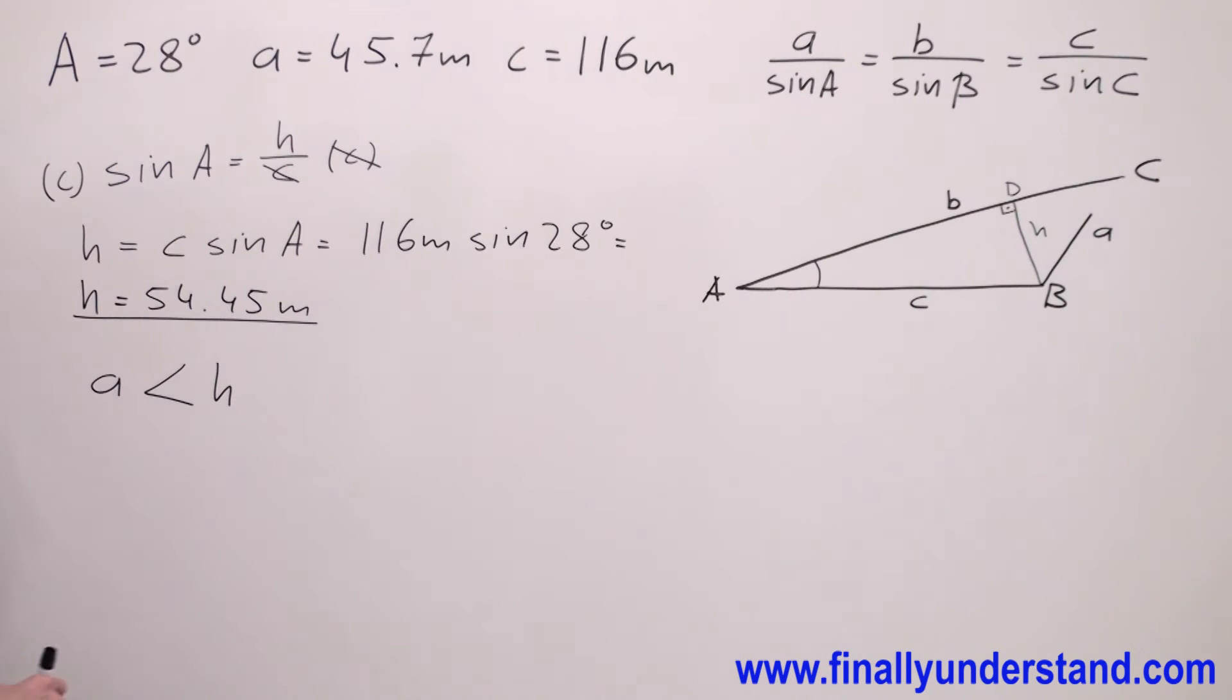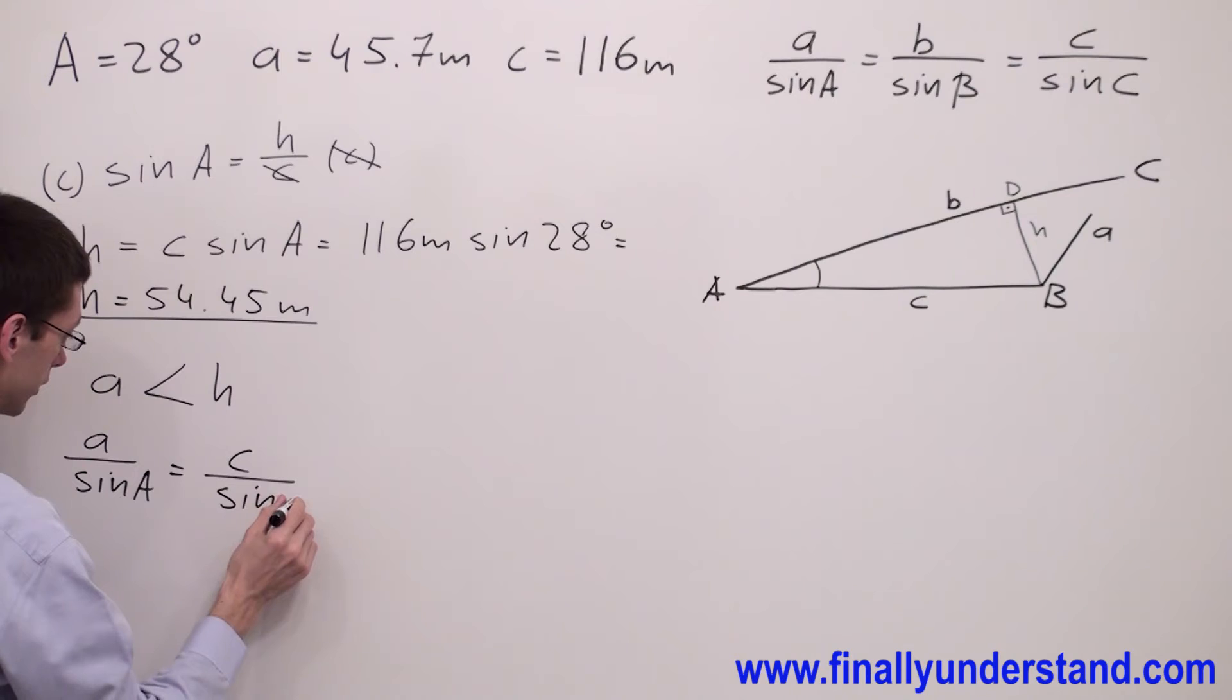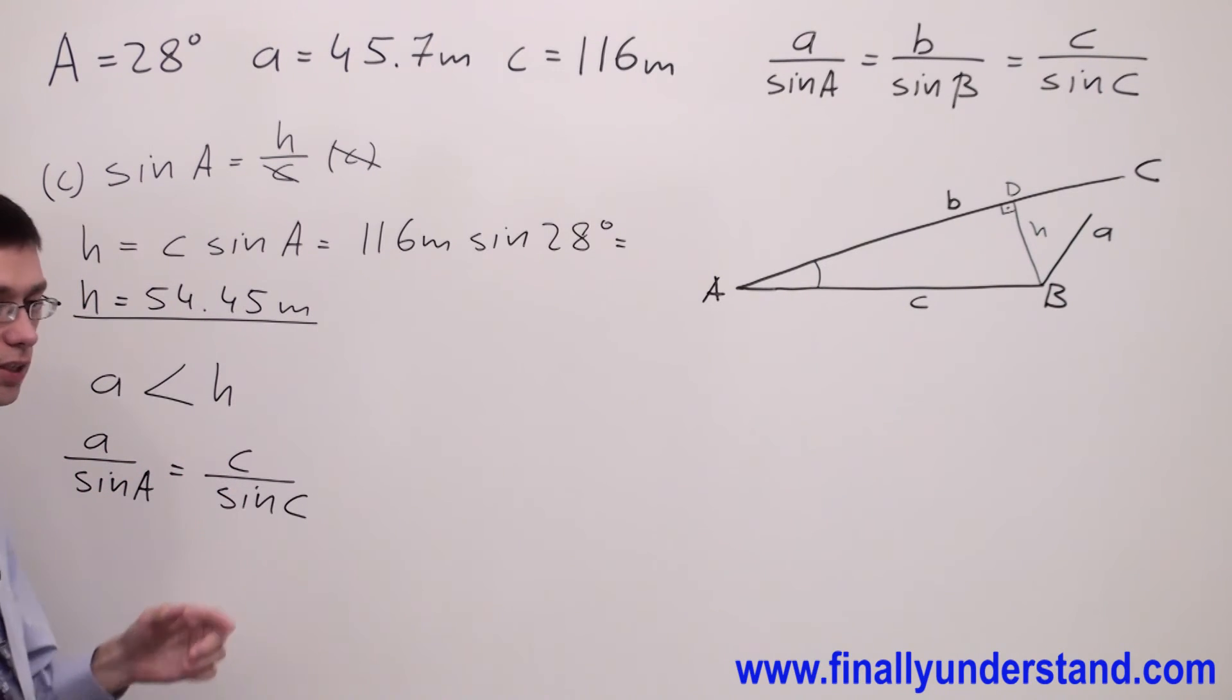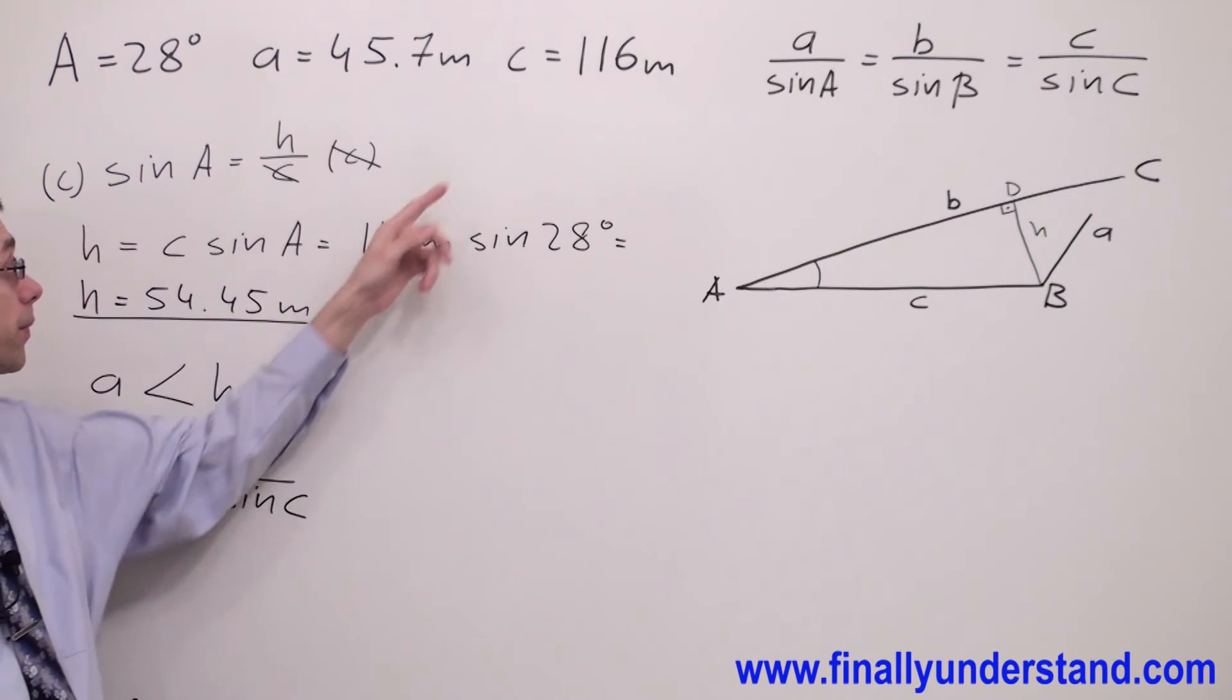But let's verify this one more time, this statement, by using the law of sines. So I'm going to write A over sine of A equals C over sine C. One more time, we're supposed to use the data which is given. So I have given side A, I have given angle A, and I have given side C, because many students ask why you use C over sine C—because C is given.